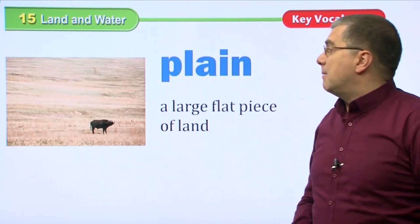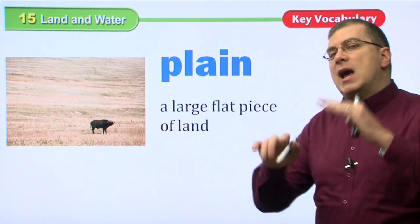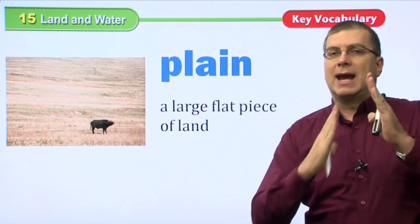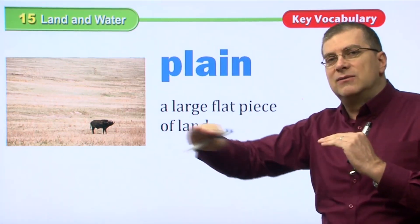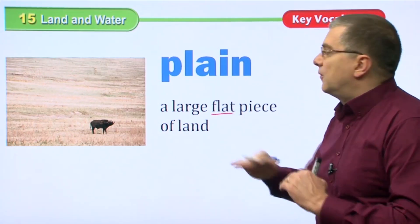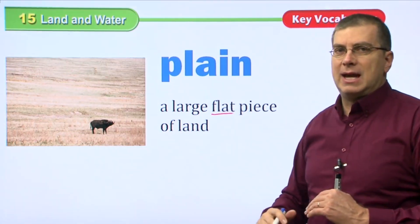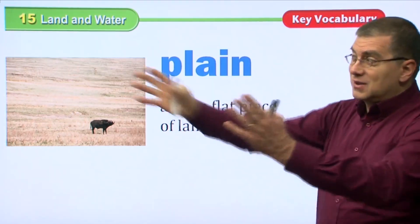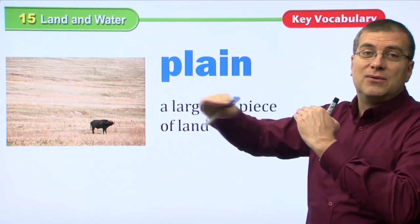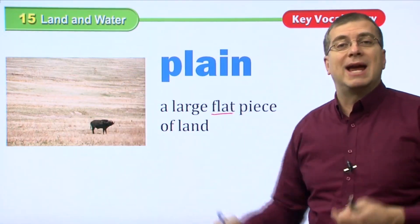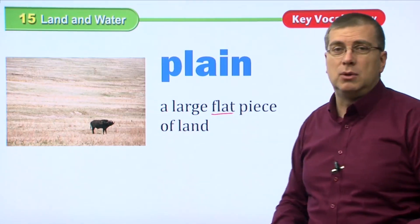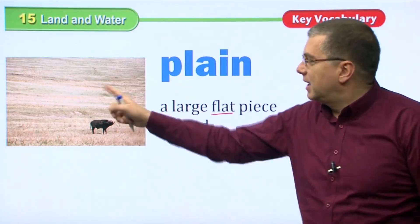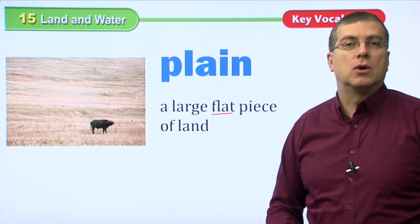What about a plain? A plain is like the opposite of a mountain. Mountains are very tall and steep, but a plain is very flat — a large, flat piece of land. You can see forever. You don't see any trees, mountains, or hills. Just very flat land. Usually large groups of animals live on the plains, run across them, and eat the plants that grow there.